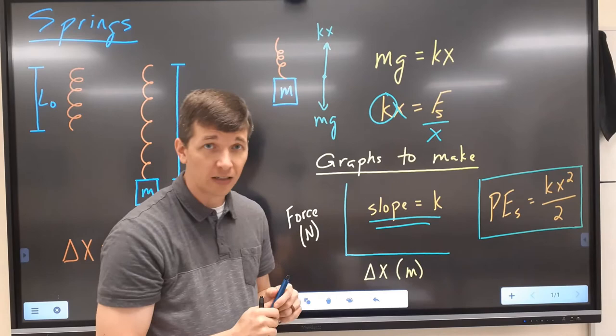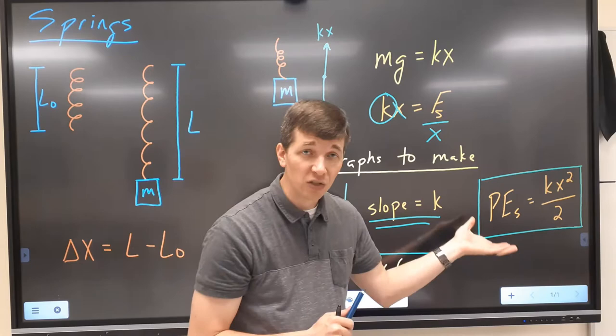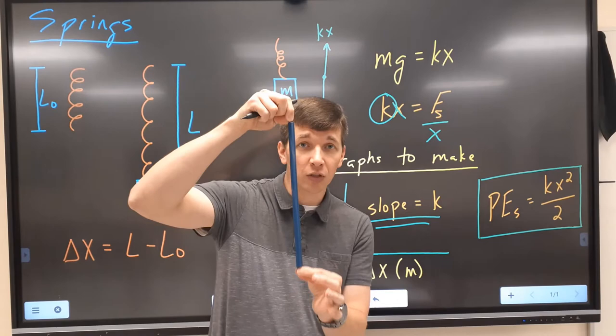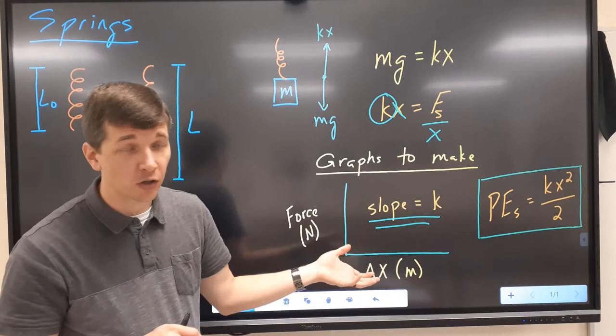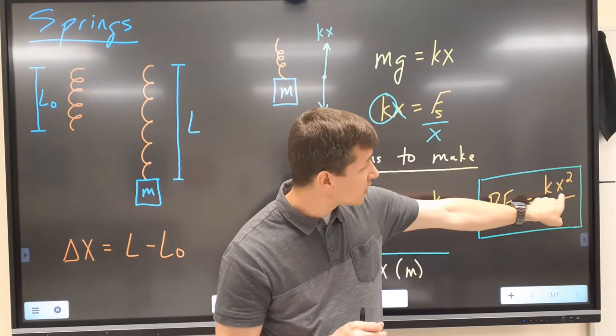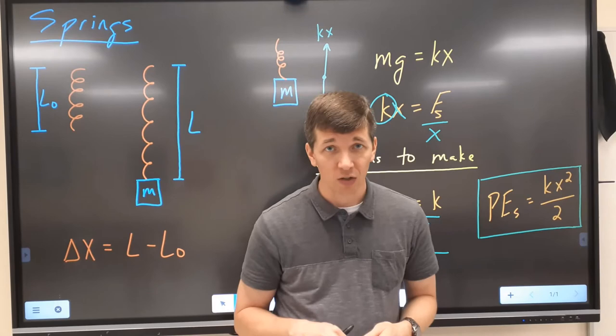Once you have that k value, in your questions you're also going to be asked to solve for the potential energy. So when you add one kilogram to this spring and it stretches, you'll calculate its potential energy using Hooke's law: the potential energy of a spring is k times x squared over two. Use the stretched distance — the x value for the one kilogram mass — when you get to that question.